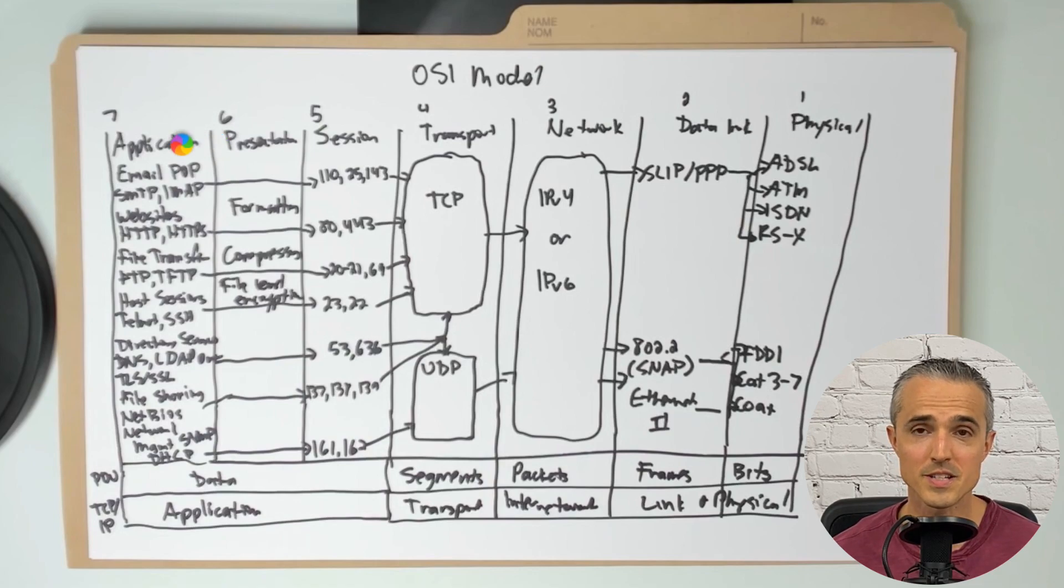Then starting with layer seven in the applications that users interact with. The email service has three protocols you can expect to see on the CISSP exam. Post office protocol, simple mail transfer protocol, internet message access protocol, and those are on ports 110, 25, and 143, which use the connection-oriented TCP, transport control protocol.